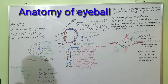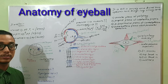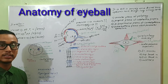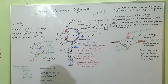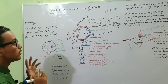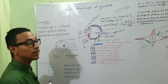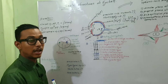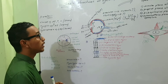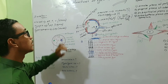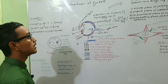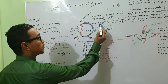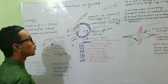Hello everyone. In this class we are going to discuss the basic structures of the eyeball and its inner contents. The eyeball consists of three layers from outside to inside. The outermost protective layer consists of the cornea in the anterior one-sixth part and the sclera in the posterior five-sixths.